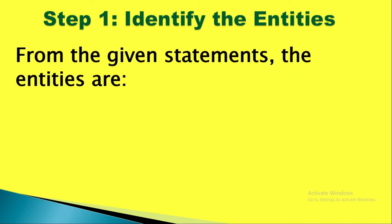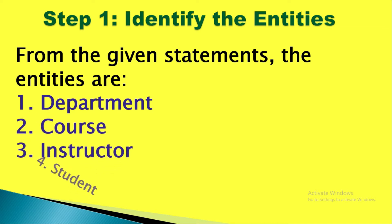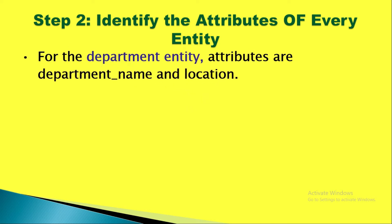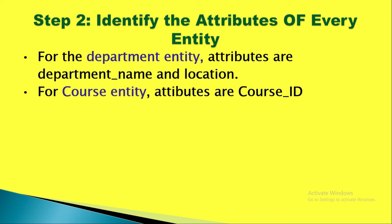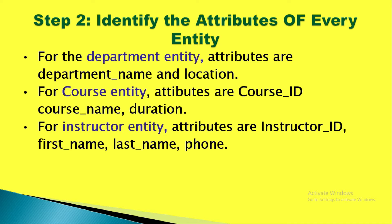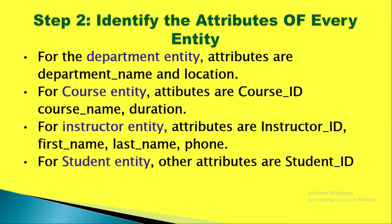Step one: identify the entities. Step two: identify the attributes. Department entity has department name and department location. Course entity has course ID, course name, and course duration. For the instructor entity, attributes are instructor ID, first name, last name, and phone number.